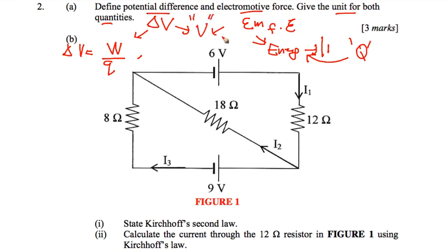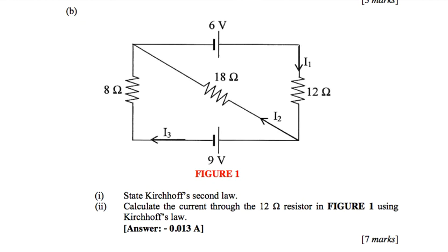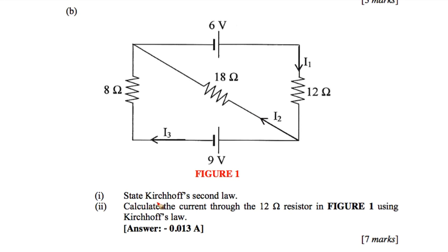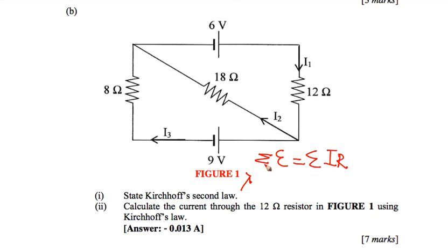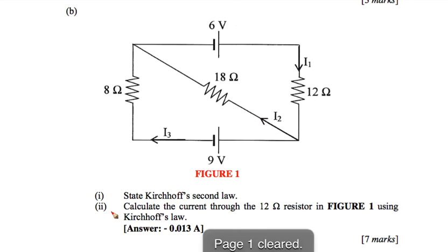Number B. You have a circuit here. Number one: state Kirchhoff's Second Law. Kirchhoff's Second Law states that in a closed loop, the sum of total EMF is equal to the total voltage drop IR. This allows you to relate EMF and voltage drop IR.